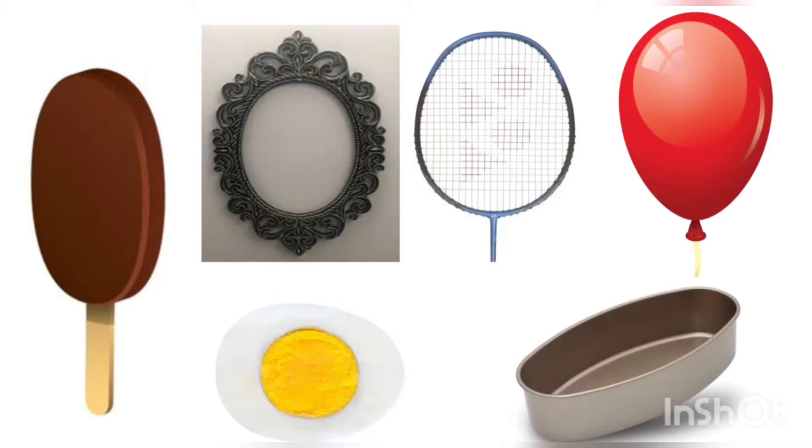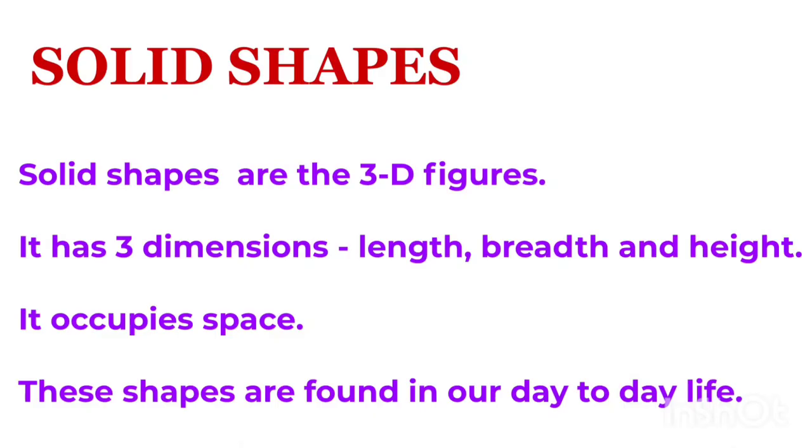Now we will learn about solid shapes. Solid shapes are 3D figures. They have three dimensions: length, breadth, and height. They occupy space. These shapes are found in our day-to-day life.